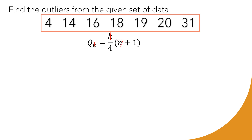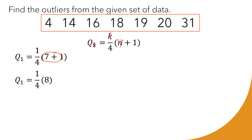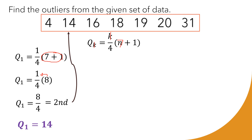Writing this clearly, we simplify Q1 = (1/4) × (7 + 1). Simplifying 7 + 1 gives us 8. Then 8 × 1 = 8, divided by 4 gives us 2. That 2 represents the position of Q1 — it is the second value. The second value from our data set is 14. Therefore, Q1 = 14.